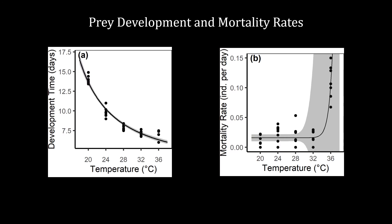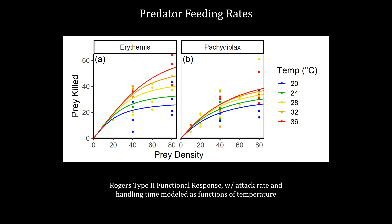To briefly recap the development rate data: temperature strongly affects mosquito development rates, halving the time they spend developing from two weeks to around one across the range of temperatures studied. But temperatures that are too warm may kill the larvae. For the two dragonfly species we studied, both increased their feeding rates in response to temperature, eating more mosquito larvae at warmer temperatures, shown in red, than at cooler temperatures, shown in blue. Notably, there were differences between species: the eastern pondhawk nymphs consumed about 80% more larvae at warmer temperatures than at cool ones, while the blue dasher nymphs ate only about half as many more mosquito larvae.